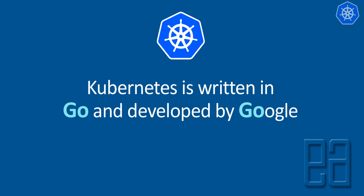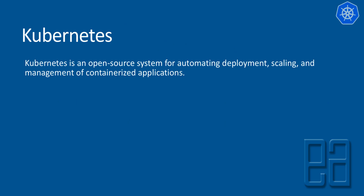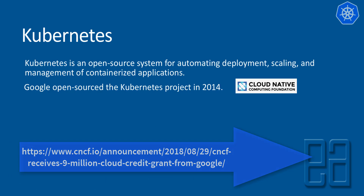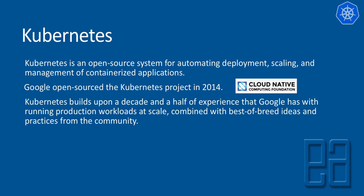Let's get into Kubernetes at a high level. Kubernetes is written in Go language, developed by Google, and is a container orchestration platform — similar to Docker Swarm. Kubernetes is an open-source system for automating deployment, scaling, and managing containerized applications. Google open-sourced the Kubernetes project in 2014 to the Cloud Native Computing Foundation. It is one of the biggest projects for container management, and the Cloud Native Computing Foundation recently received a significant contribution from Google as Kubernetes is decentralized as a separate project.